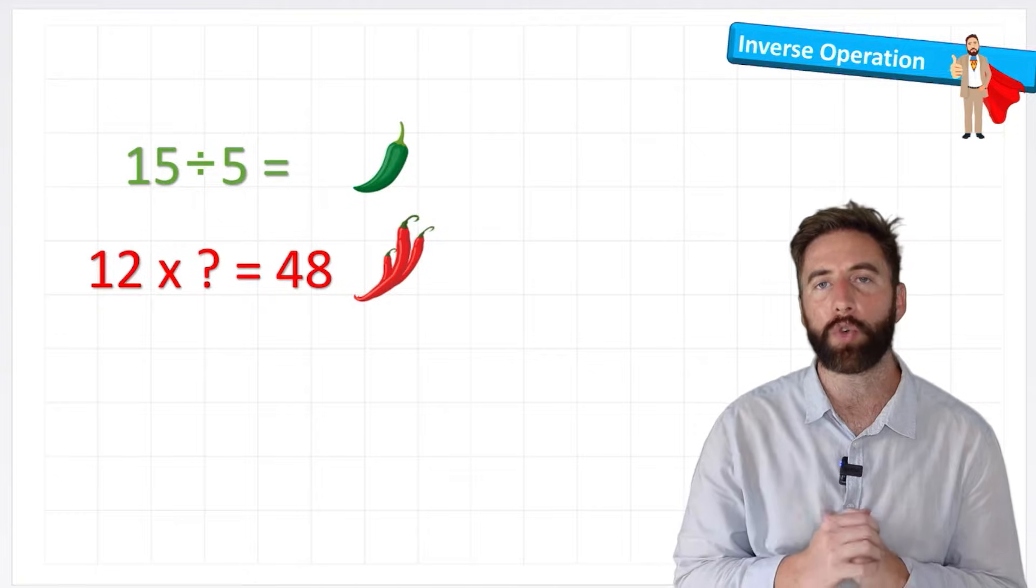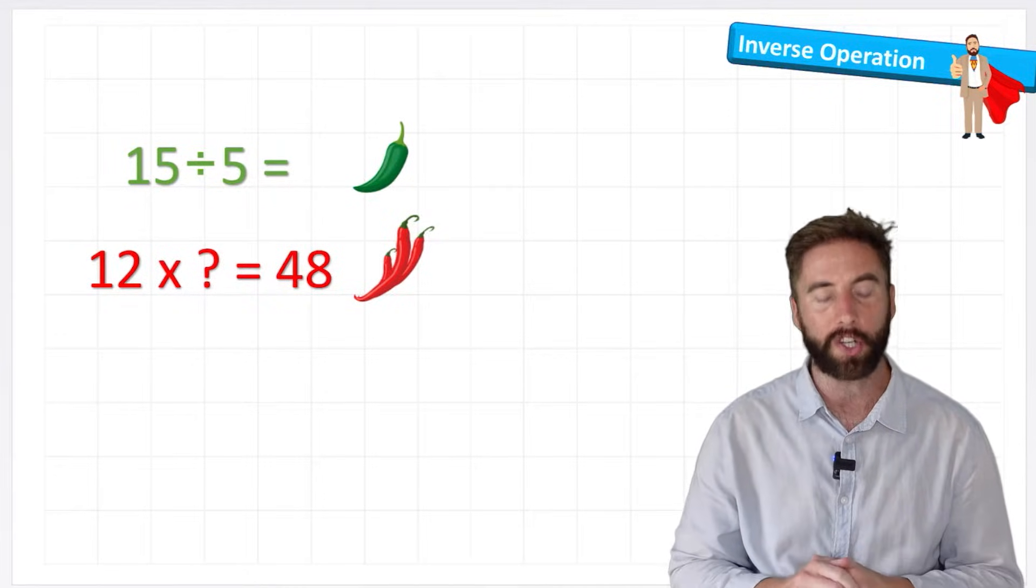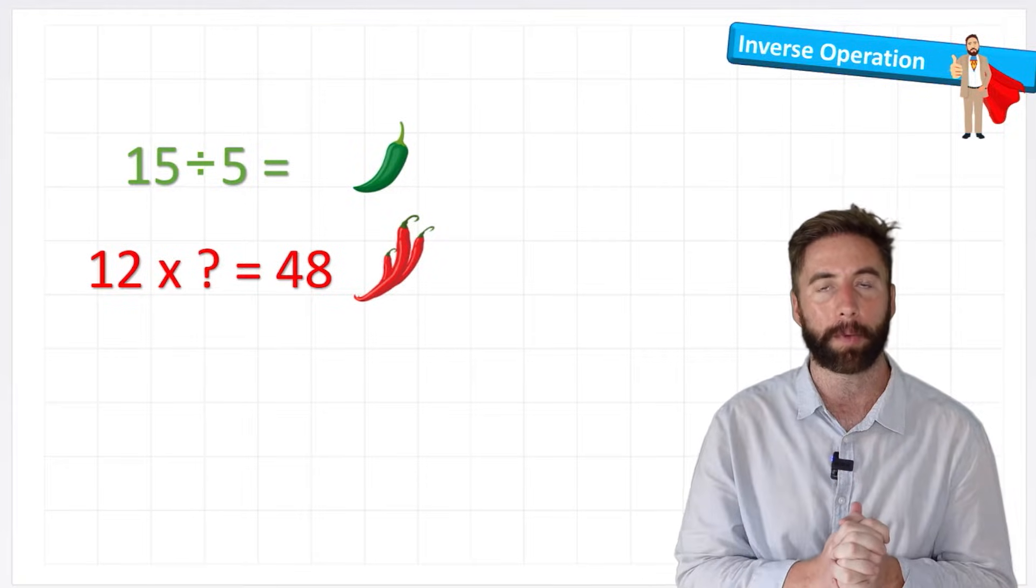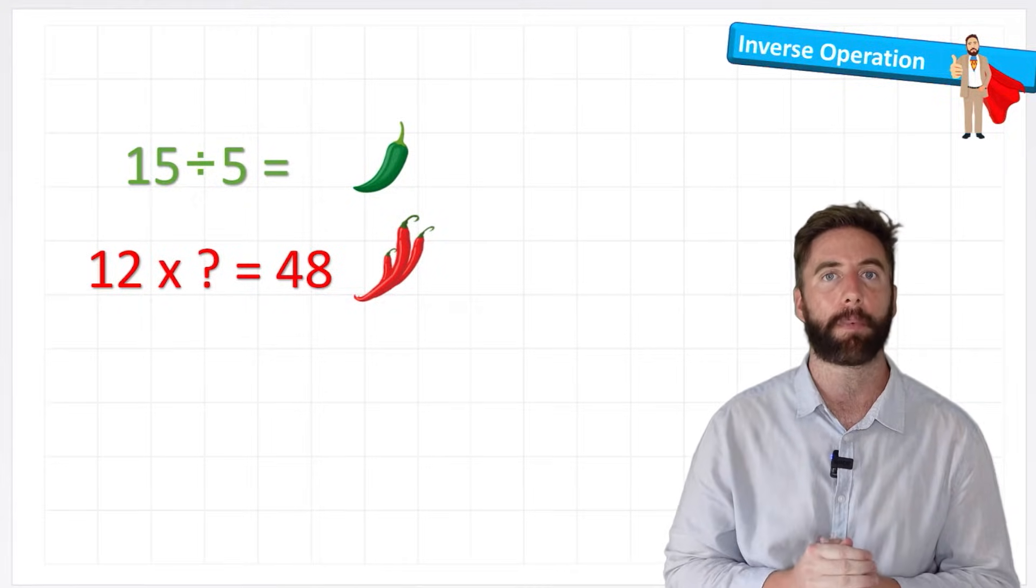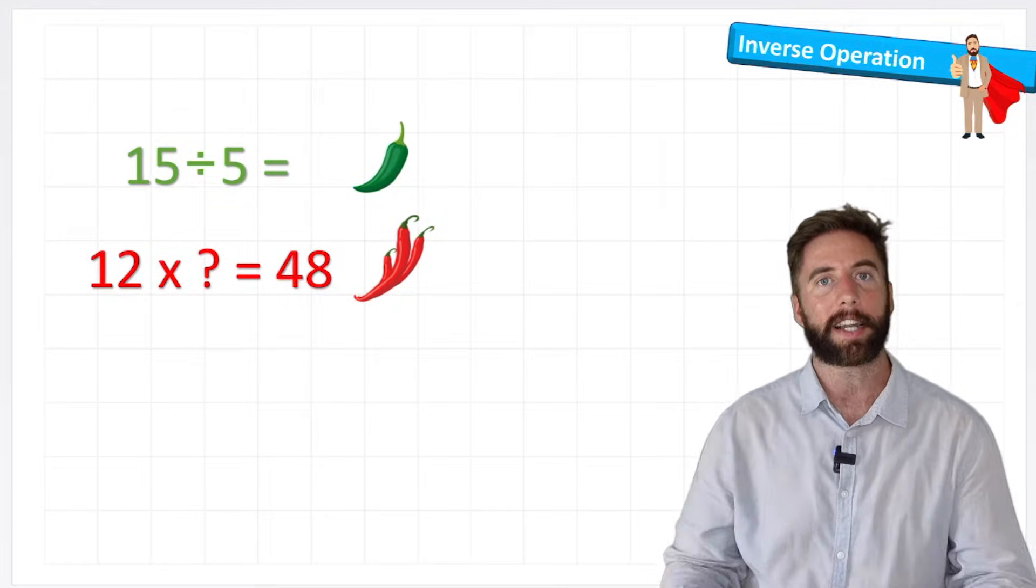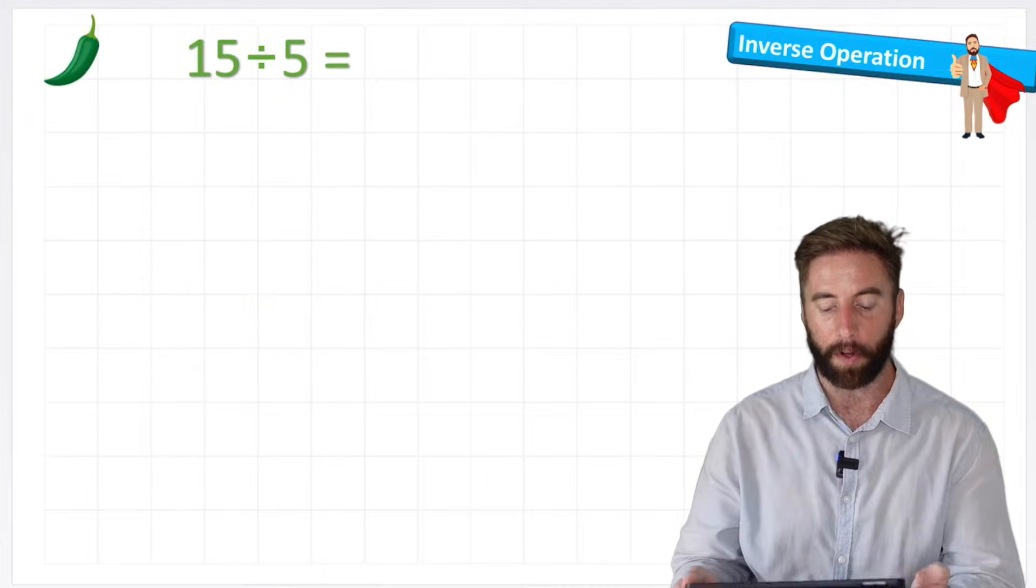We're going to be looking at two different styles of questions here. We've got our green chili challenge, which is just a division question, and we're going to inverse it into a multiplication, and then we've got a missing number problem that we're going to see how inverse can help us solve. Let's start with our green chili challenge, our first question.